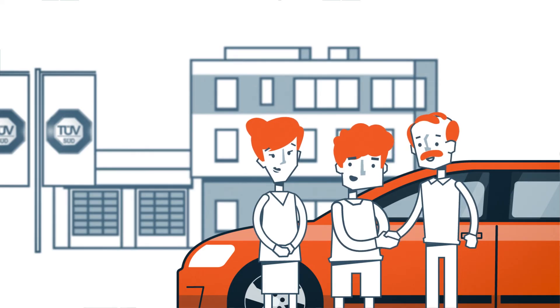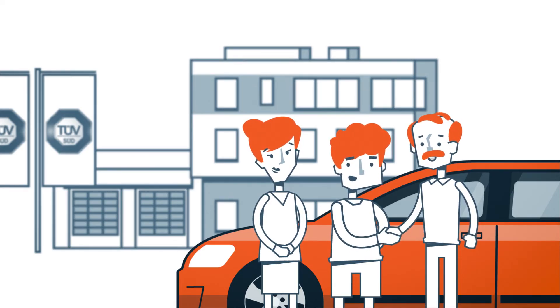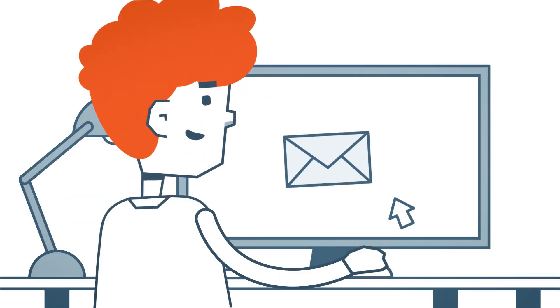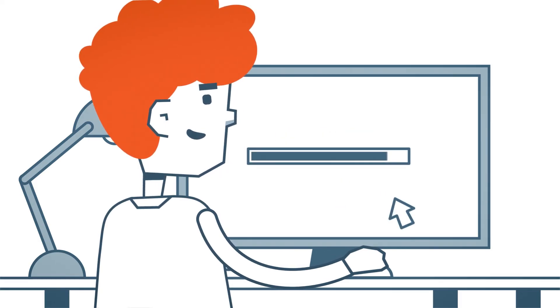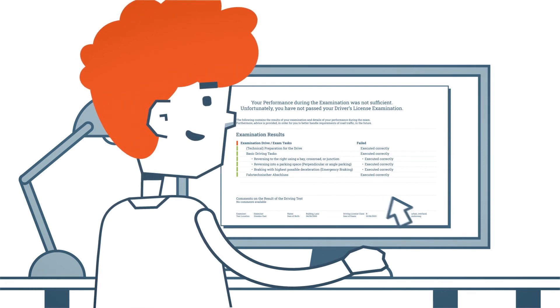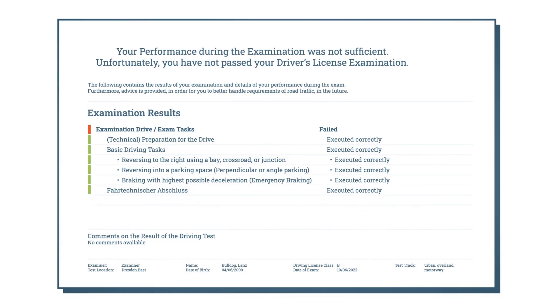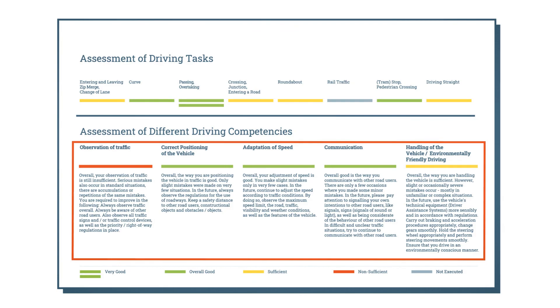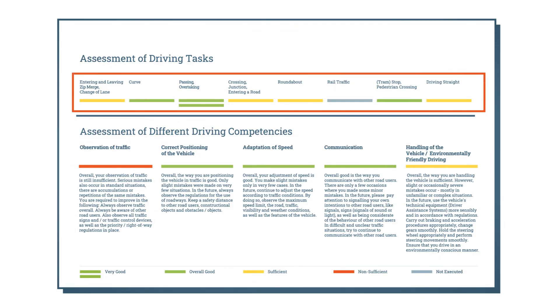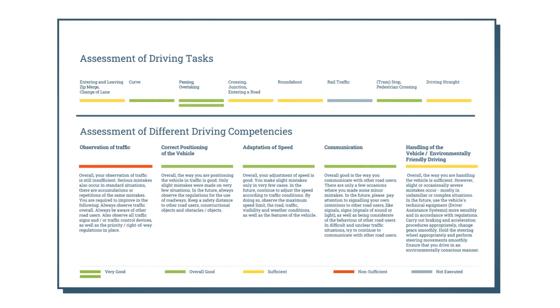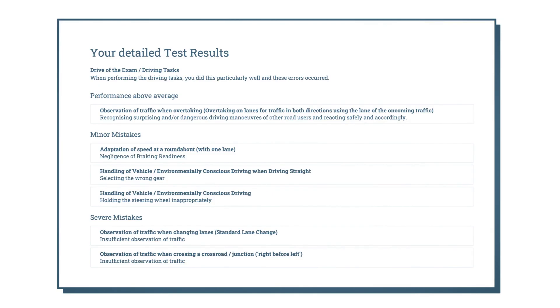The candidate receives a written feedback shortly after the test, usually provided electronically. Each candidate receives written feedback on their performance, which can be used to further develop driving skills after passing or failing the test. In addition to the test result, the written feedback includes the examiner's overall assessment of the five driving competence areas and the eight driving tasks. If any of these was not rated very good, the candidate will receive appropriate information on what they can improve in the future. The written feedback also contains individual particularly good performances and mistakes.